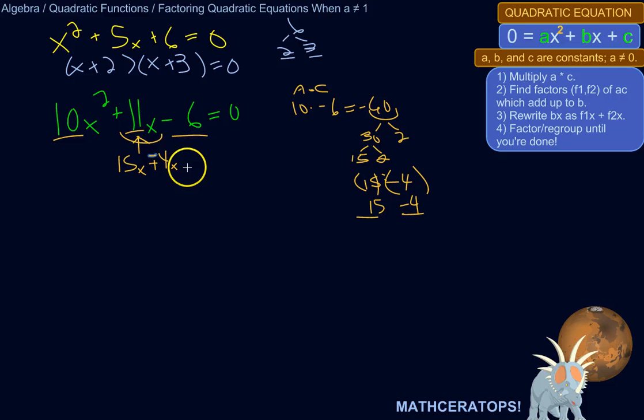Might be easier to keep track of the negative sign there. So we rewrote 11x as 15x plus negative 4x. And that's true. If we were to combine those like terms, we'd get 11x. So we're good. So let's write our polynomial as we've got it now.